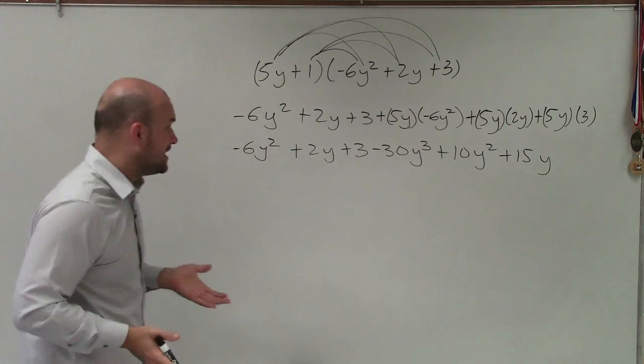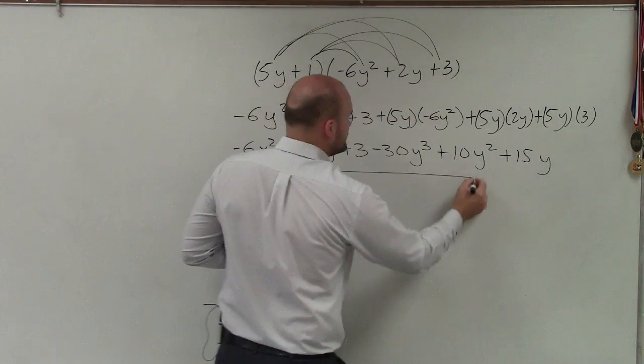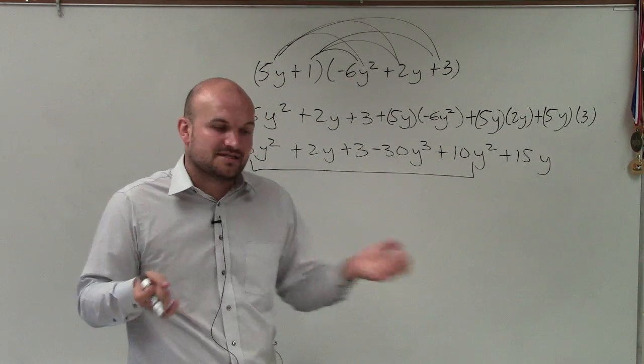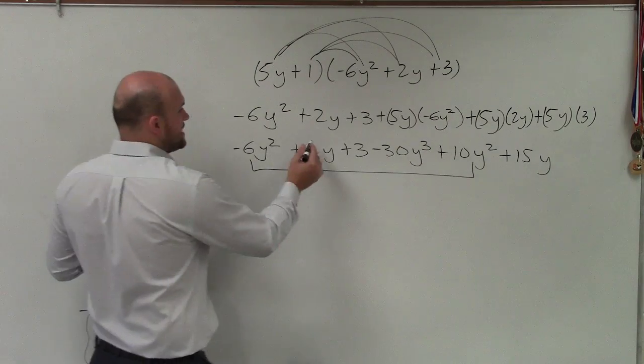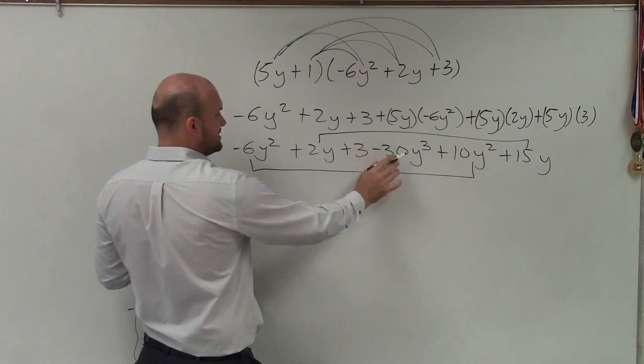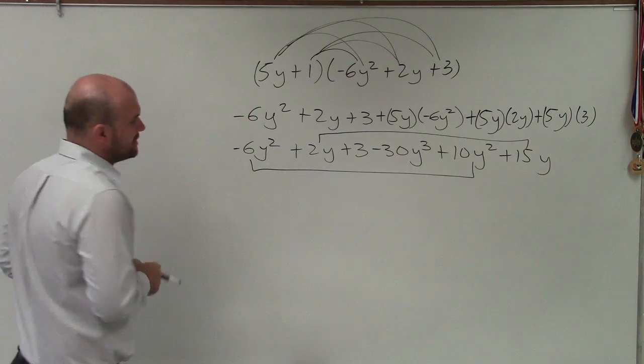Now, I look for like terms. And I see here, I have 2 y squareds. So I can combine the y squareds by combining them. I just add and subtract their coefficients, and I keep the term the same. And then I have 2y plus 15y. I have no other constants and no other y cubed.